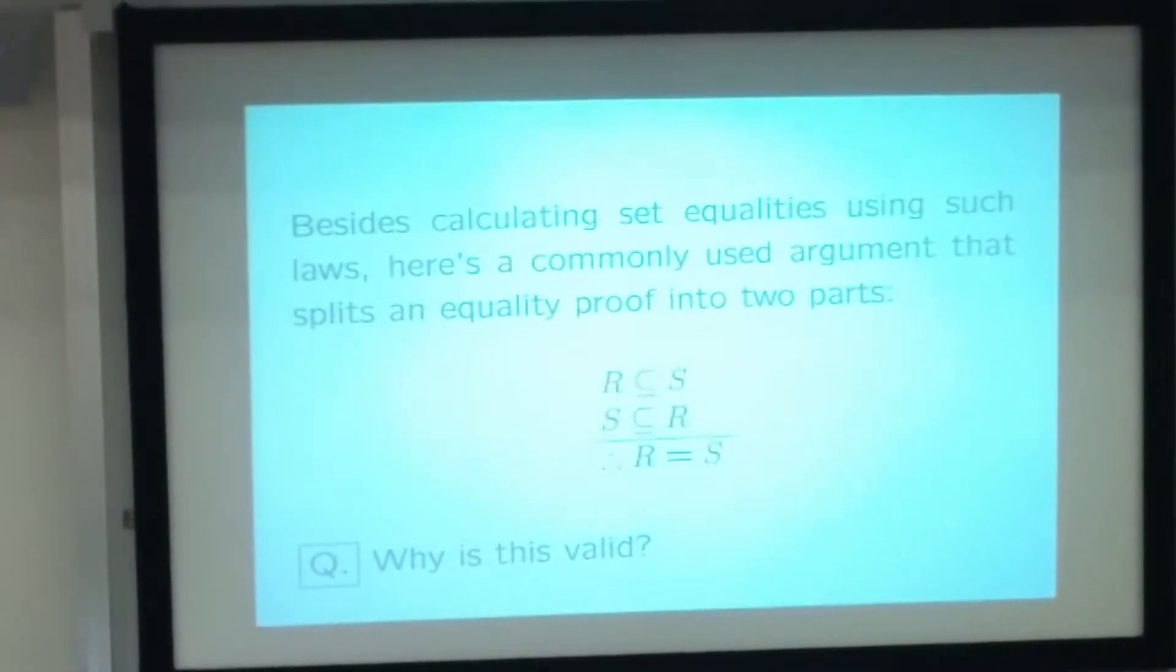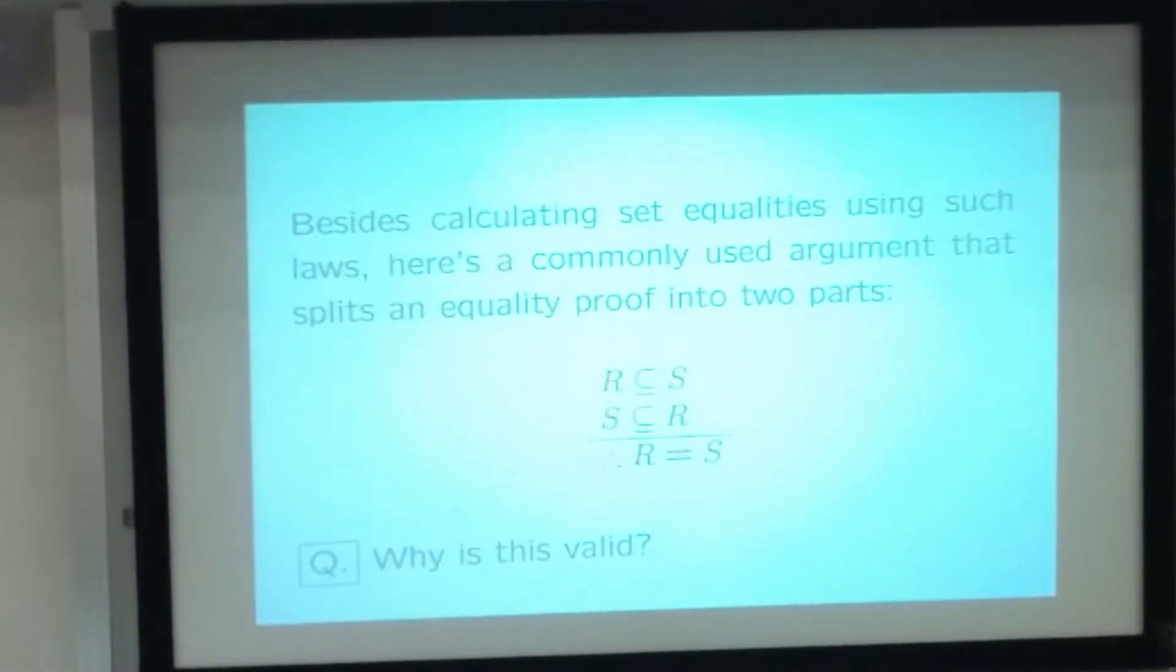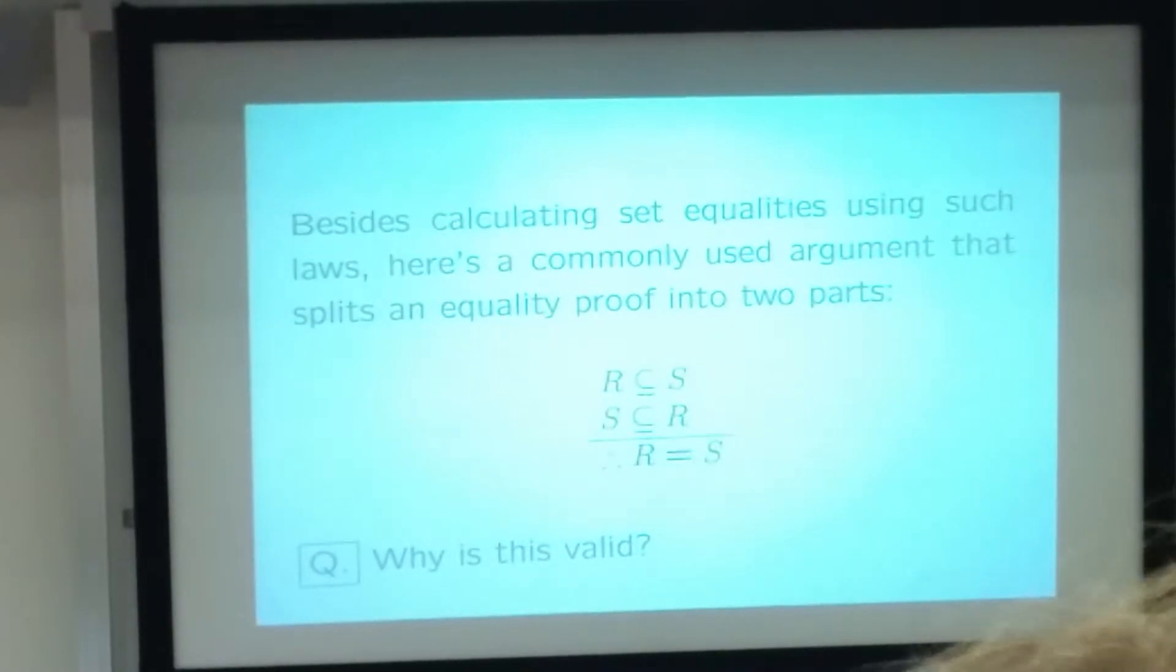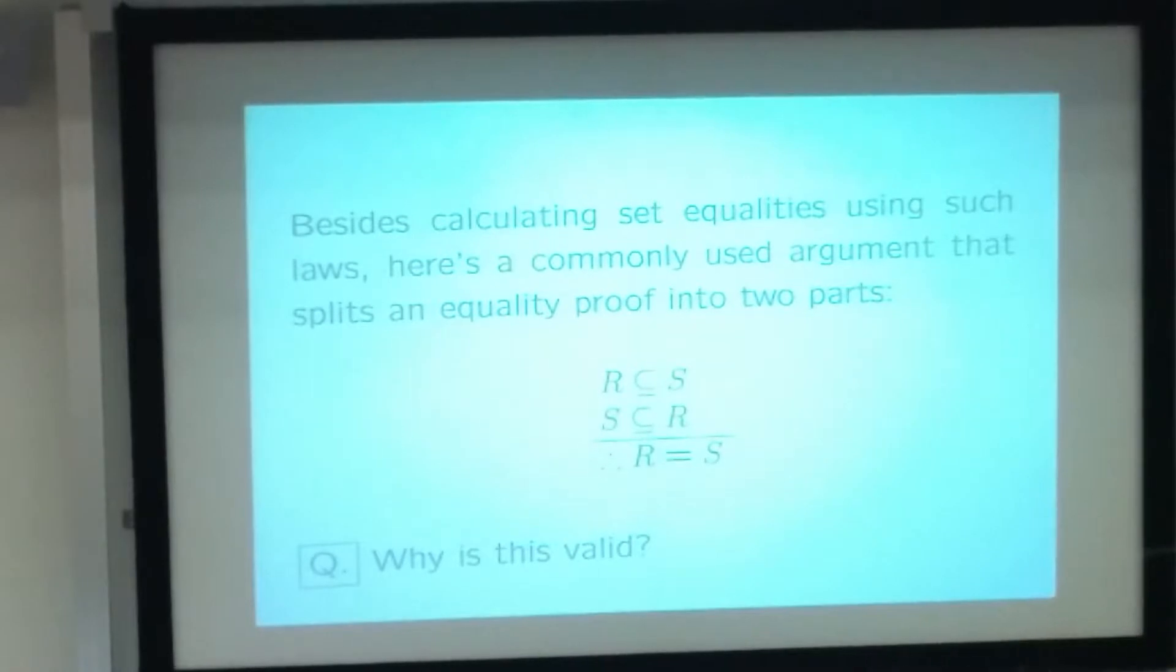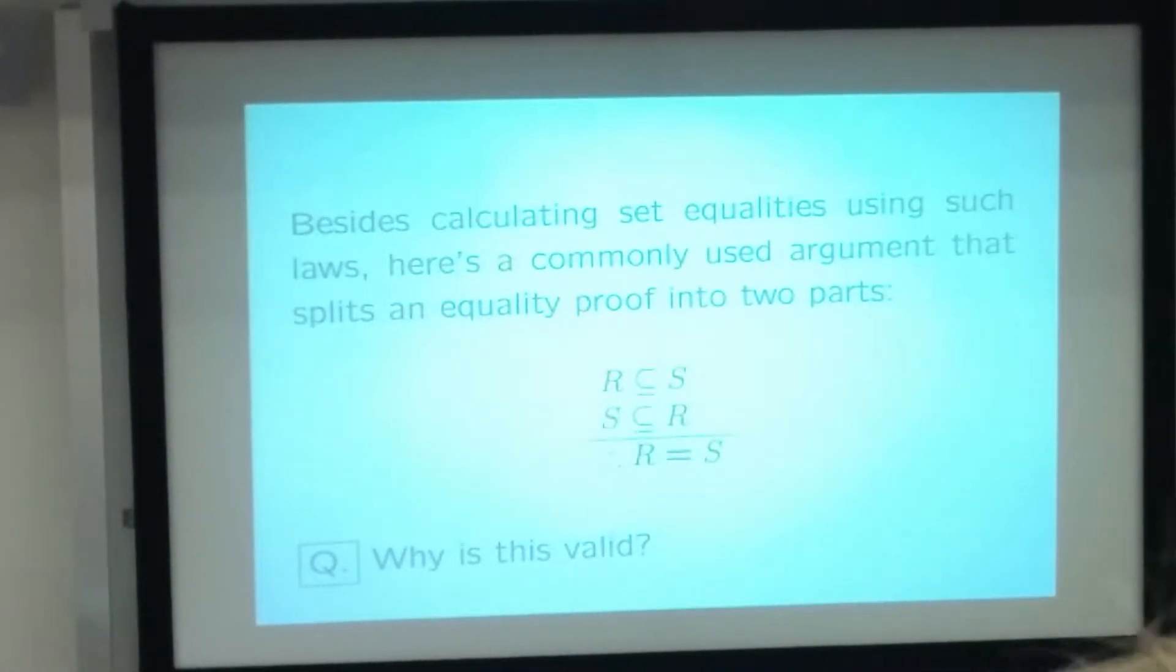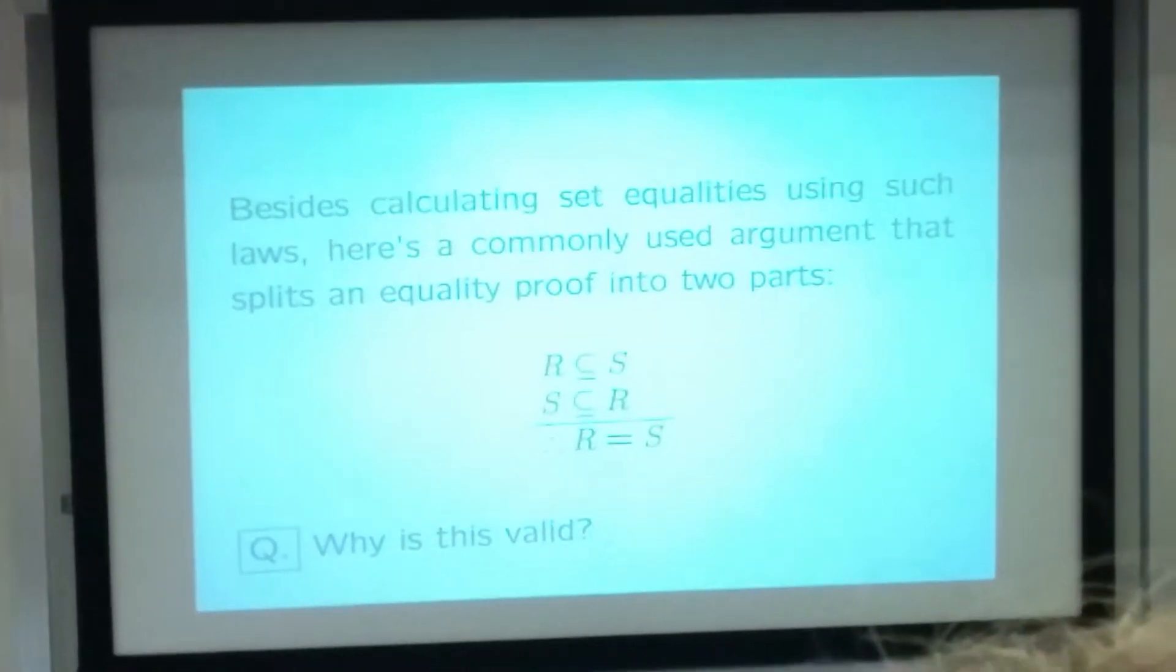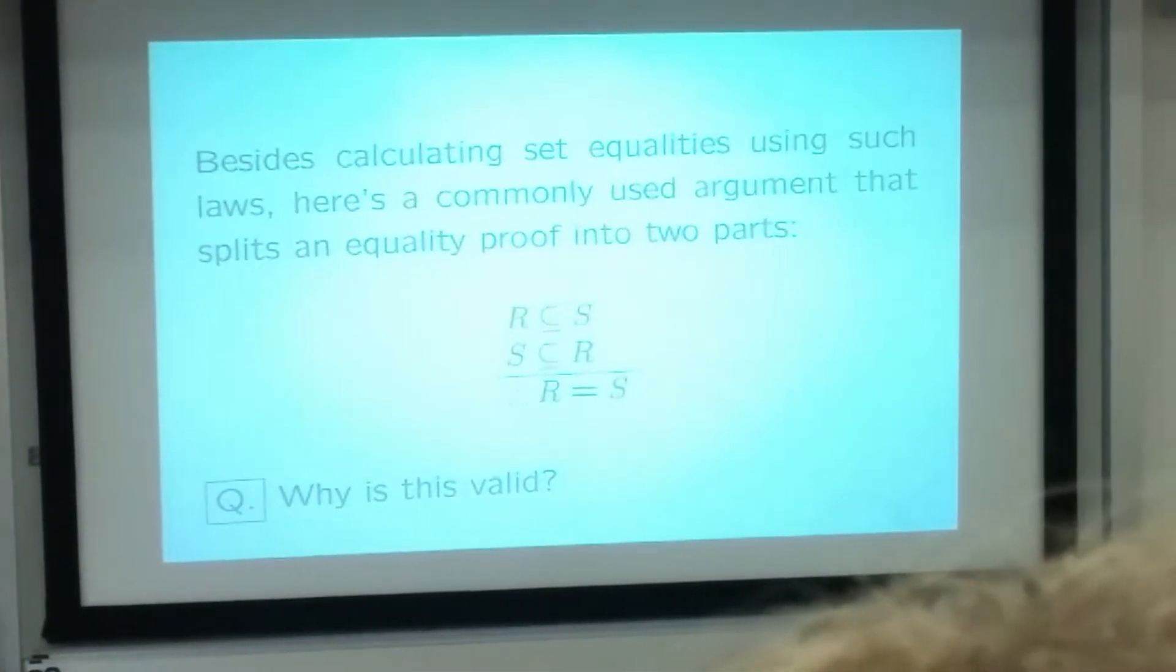I don't really understand that notation. The line under it? The line above there. Oh, that line. Yeah, what does it mean? Does it mean that if R equals S, then it will be both a subset? I think it's like above it are propositions, and below it are conclusions that you can draw from it, I think.